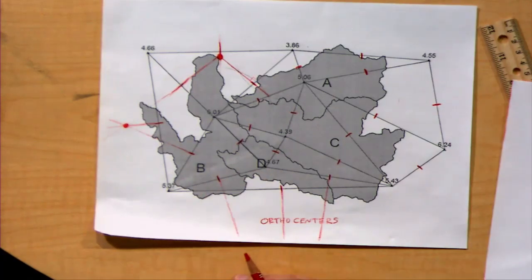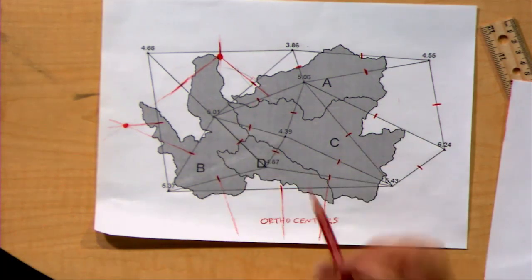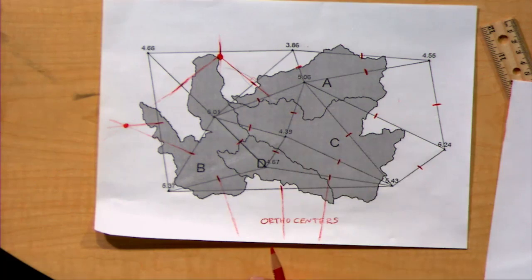So your next task is to generate ten more, or actually nine more orthocenters, one for each of the triangles.